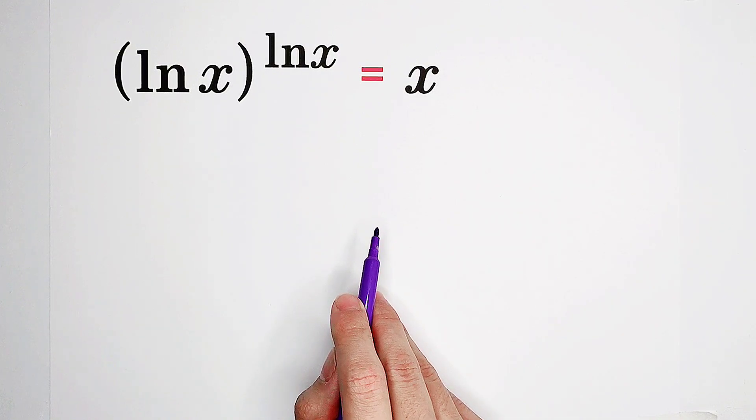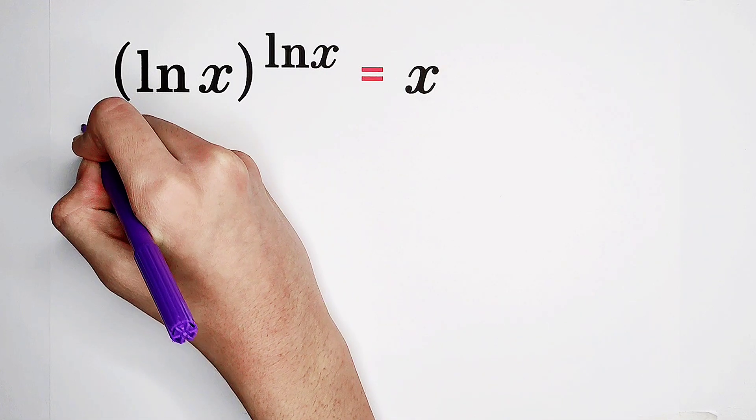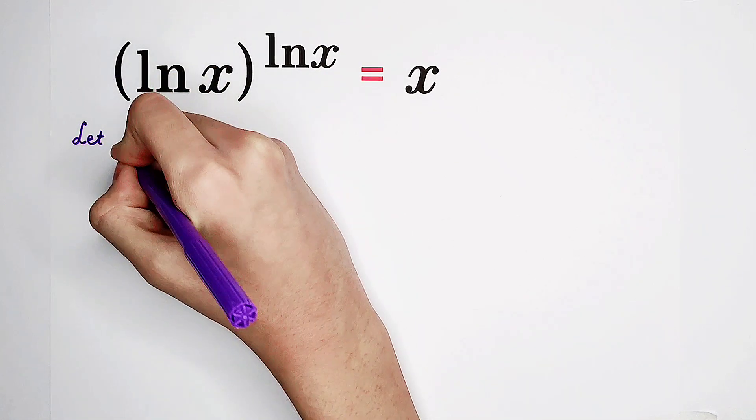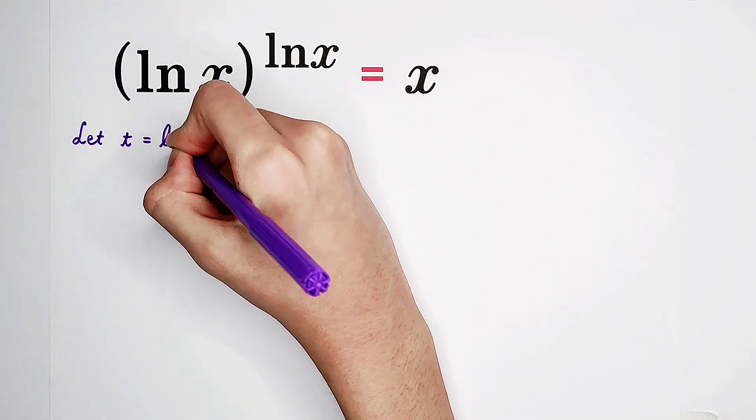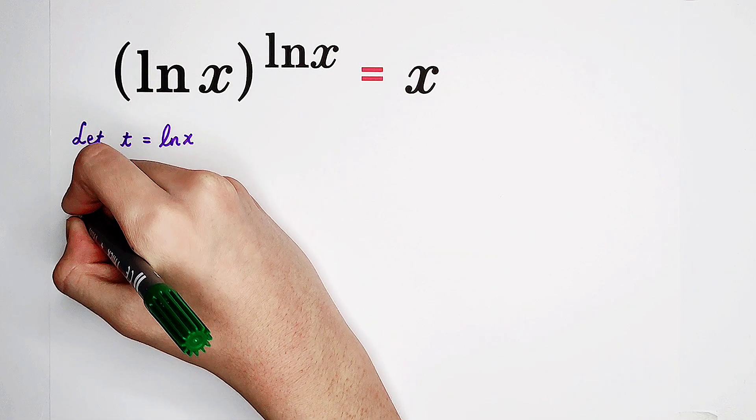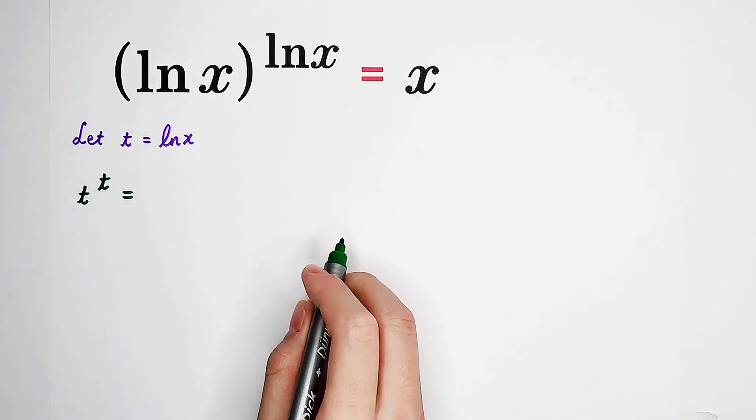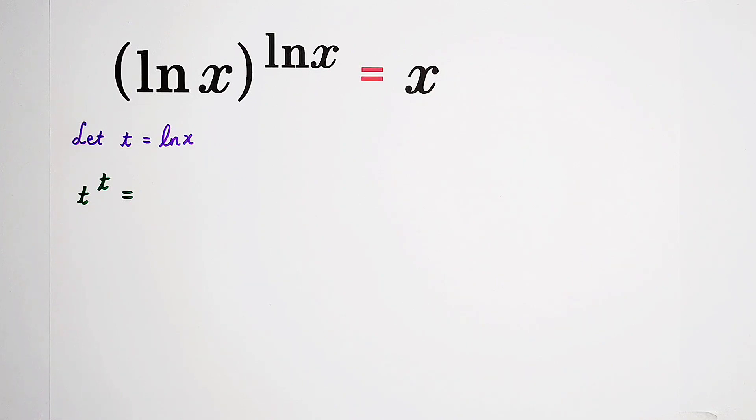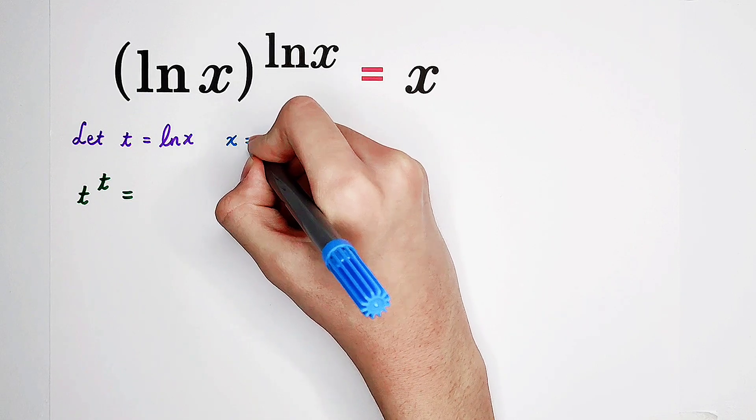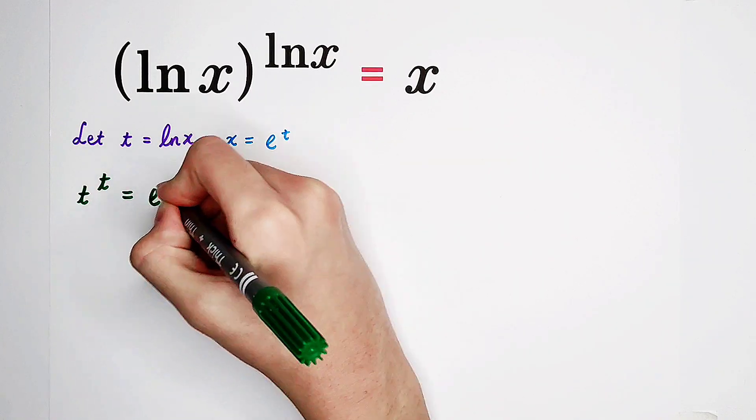In our first step, we will substitute t for the natural log of x. Then this equation will look prettier. Our left hand side will become t to the power of t. What about the right hand side x? We know that the natural log of x is t, so we can get that x is e to the power of t. So now our right hand side is e to the power of t.